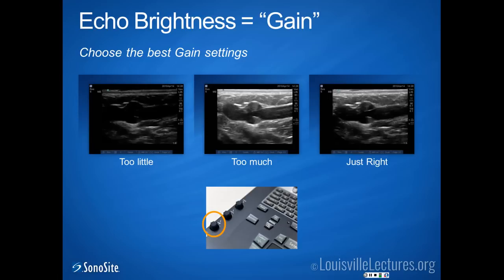Echo brightness equals gain. On older black-and-white televisions there was a gain button you'd rotate to make the image brighter — that's basically what the gain button does on an ultrasound machine. It enhances the echoes to display them more brilliantly on your screen. There are actually three gain controls on the console: one for the near field, one for the far field, and one for total gain. Most people just manipulate the total gain button. Too dim, too bright — you want the best image, and you can adjust that on the console.